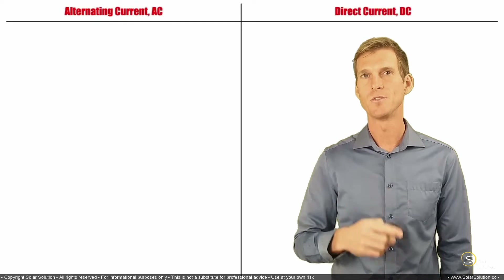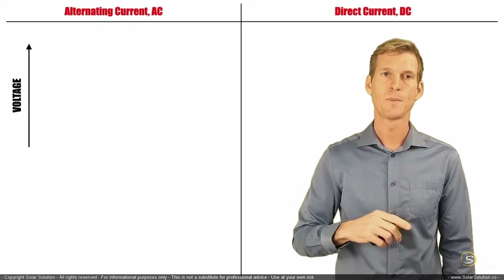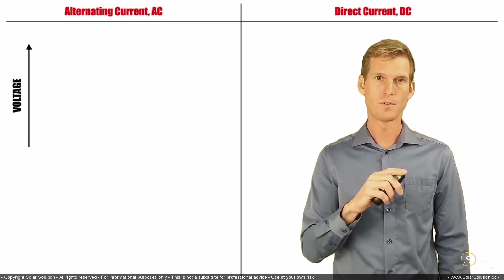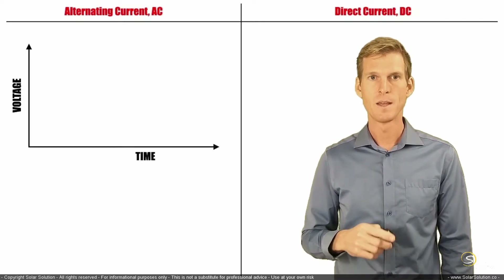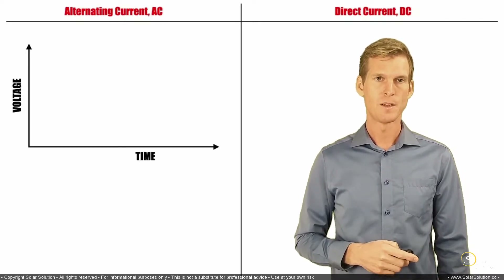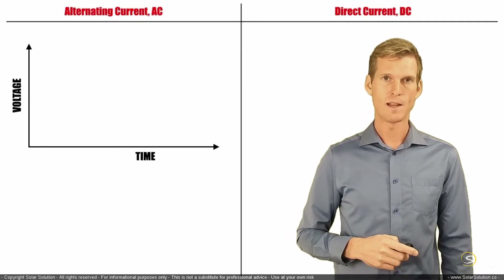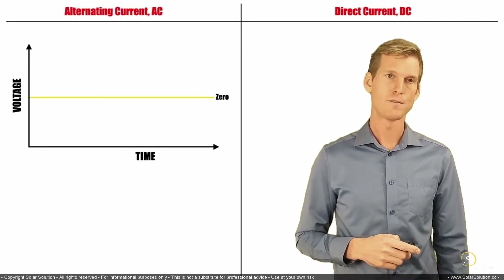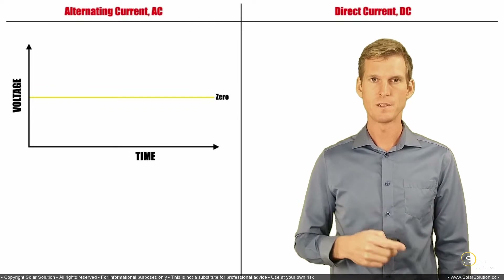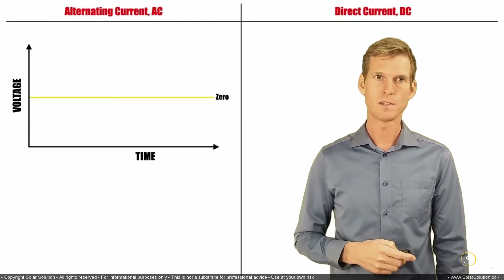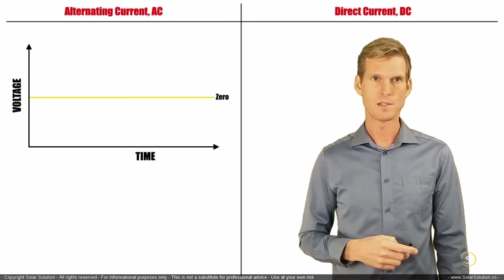We start by drawing a graph where on the vertical axis we plot the voltage and on the horizontal axis we plot the time as it progresses. We draw a zero line to identify where the voltage is zero — above the zero line the voltage is positive, and below the zero line the voltage is negative.